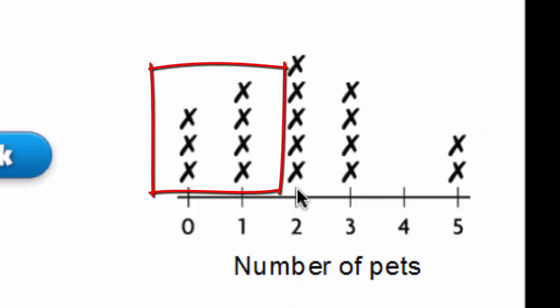Then let's see how many have fewer than two. Not two, but fewer. So we have to count the zero and one pets. One, two, three, four, five, six, seven.